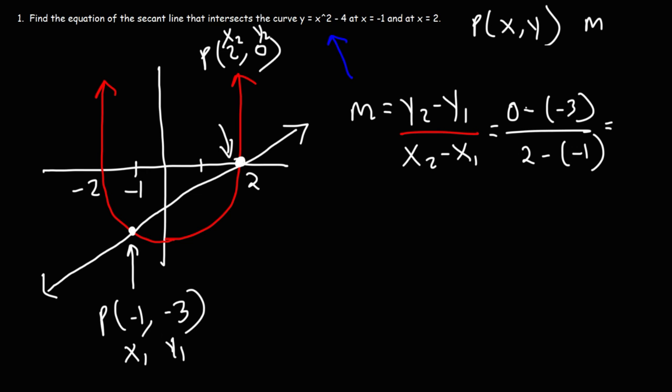0 minus negative 3, that's the same as 0 plus 3. 2 minus negative 1 is equivalent to 2 plus 1. So the slope is 3 divided by 3, which is 1. So that's how we could find the slope of a secant line.